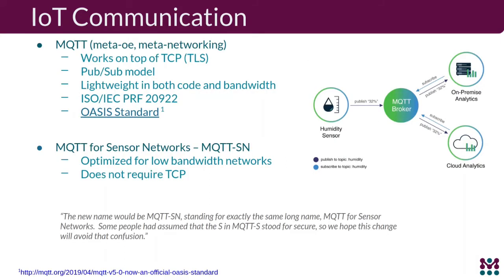Looking at communication: you have interfaces that provide connectivity and protocols applied on top. MQTT is very popular — all the big cloud providers use it. MQTT is a simple publish/subscribe model where devices push data and cloud infrastructure subscribes and forwards it. It's standardized, has built-in TLS security, but requires TCP. There is also MQTT-SN, optimized for lower bandwidth sensor networks and doesn't require TCP.